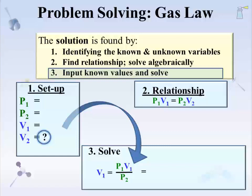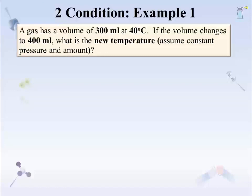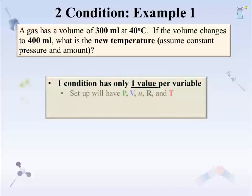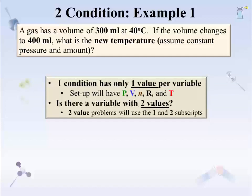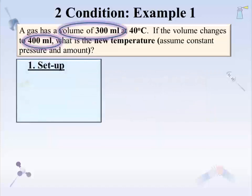On to four practice problems. Problem 1: a gas has a volume of 300 mL at 40 degrees Celsius. If the volume changes to 400 mL, what is the new temperature? Assume constant pressure and amount. An early question is whether this is a one- or two-condition problem. The surest way is to see if there is a property that has two given values. Volume in mL has two condition values, so this is a two-condition problem, and variables in the setup will have subscripts 1 and 2.